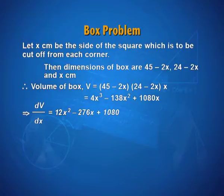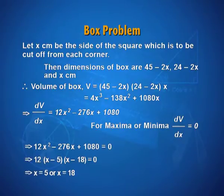In this case, derivative turns out to be a quadratic which is going to be maxima minima when it is 0, resulting in two values of x. x is 5 or x is 18.